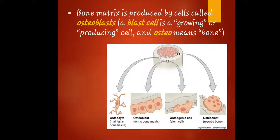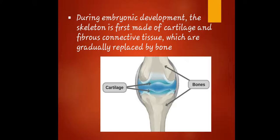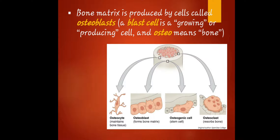Bone matrix is produced by cells called osteoblasts. A blast cell is a growing or producing cell, and osteo means bone. So osteoblasts means bone that is growing or producing. During embryonic development, we begin with the cartilage itself, and afterwards the bone matrix will be produced by cells called osteoblasts, meaning the bone is now growing and producing.